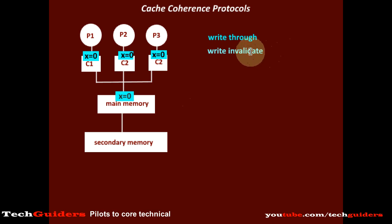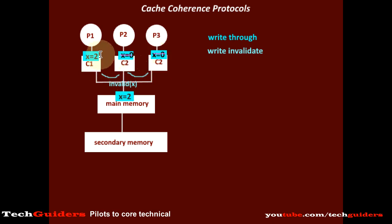In write-through with write-invalidate, whenever the processor updates the shared data in its local cache, since write-through is used it will simultaneously be updated in the main memory, and an invalid message will be broadcasted to all other local caches. Any local cache having the shared location will mark it as invalid. If there are no intervening reads by any other processor, for further multiple writes there is no need to send the invalid message again — the invalidation signal is required only for the first write on this block.